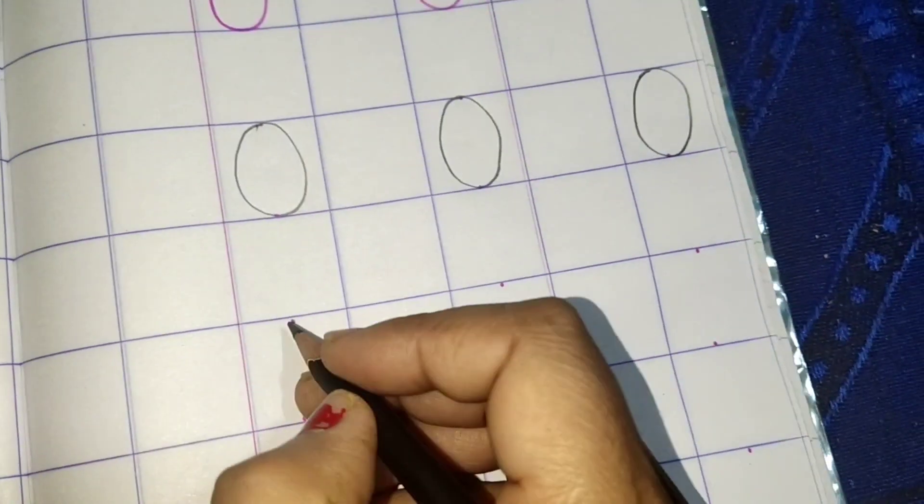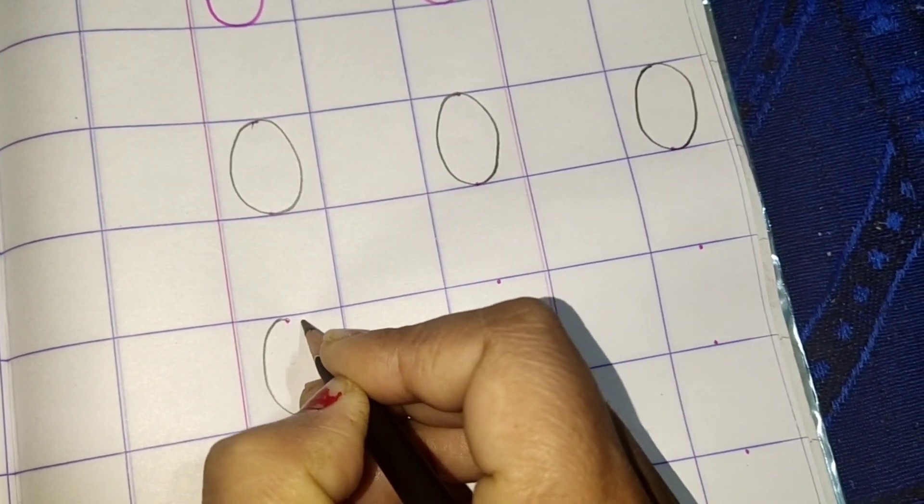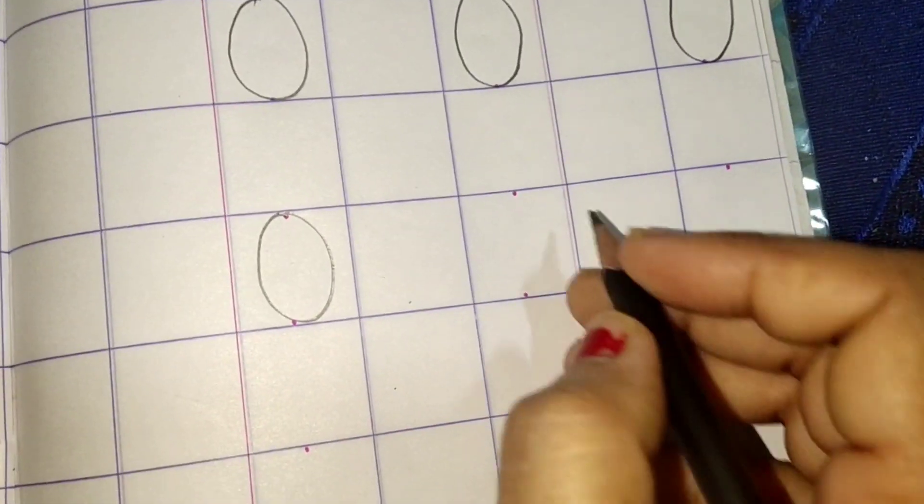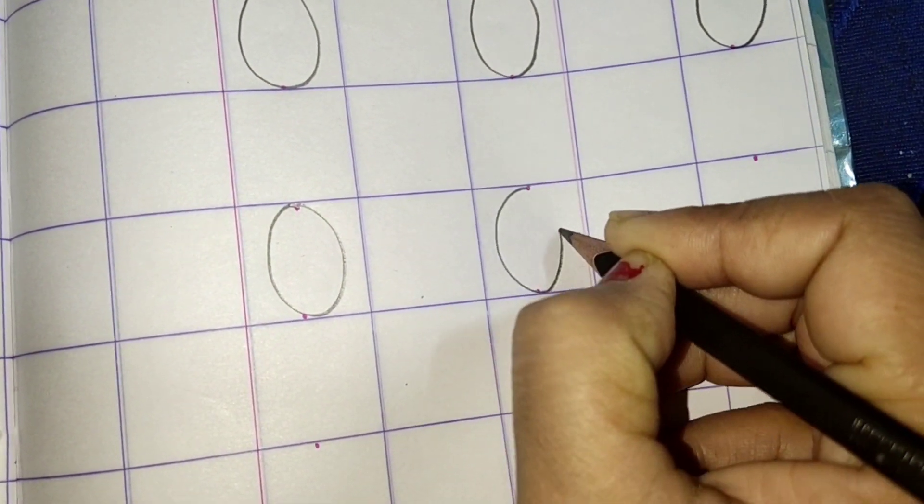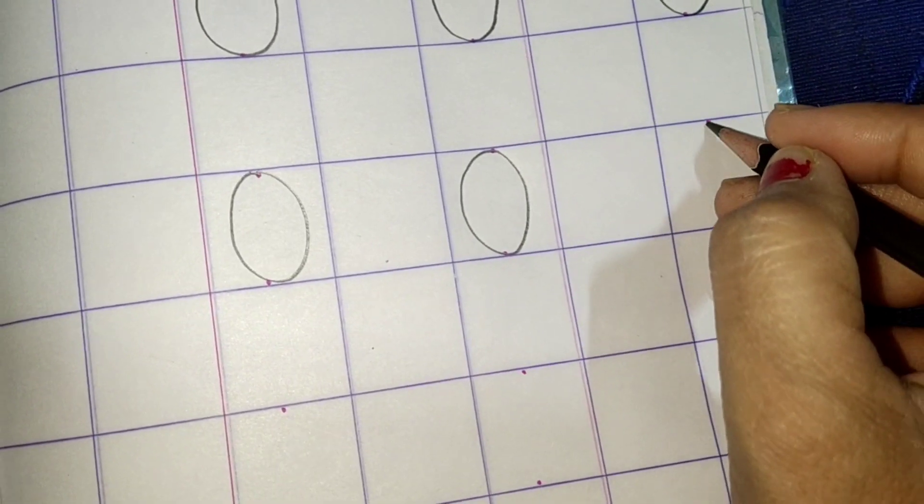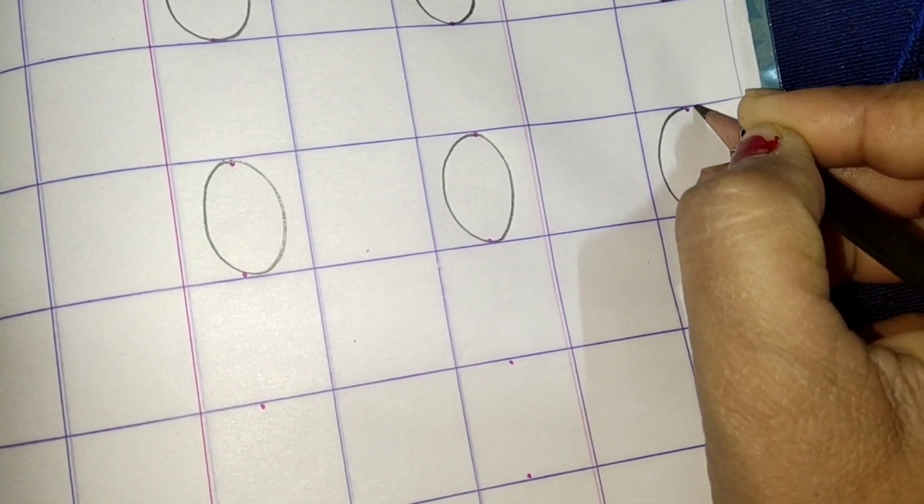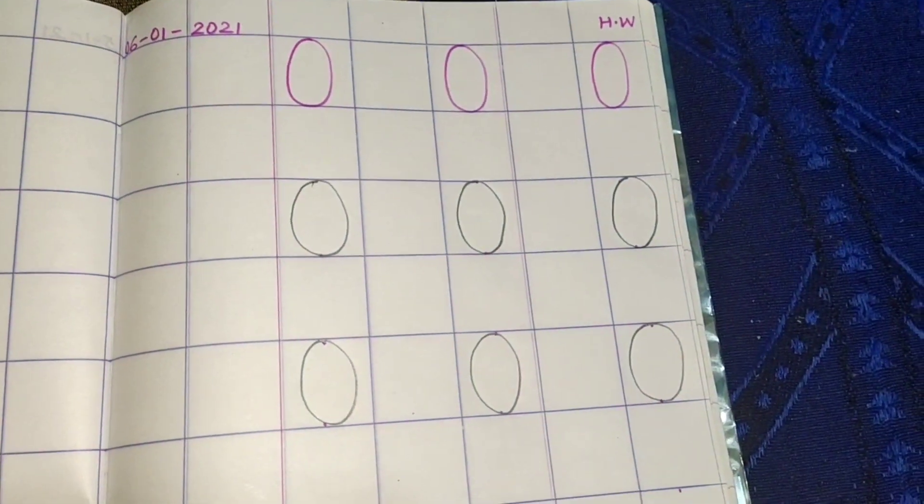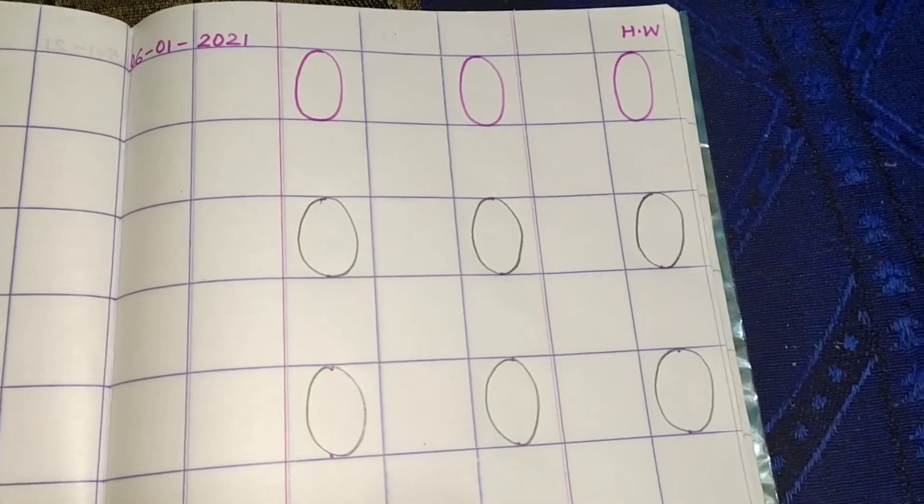Okay. You have to round it like this. You have to round it like this. Which number is this? This is zero. Number zero. Okay. You have to write zero and send ma'am pictures. Bye-bye.